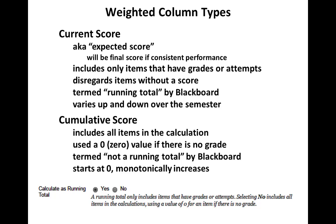The other weighted column type is cumulative score. This includes all items in the calculation and uses a zero value if there is no grade. It's termed 'not a running total' by Blackboard. It starts at zero and monotonically increases. The information on the bottom is just another screenshot in Blackboard indicating to instructors whether to click yes or no to make it a current score or a cumulative score.